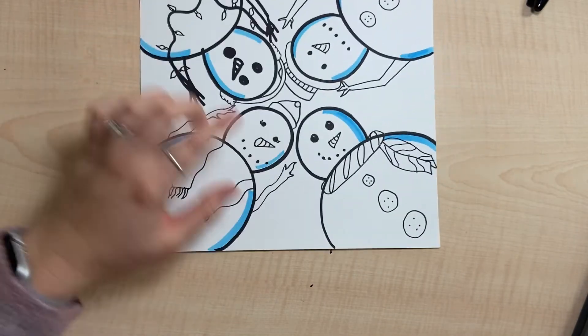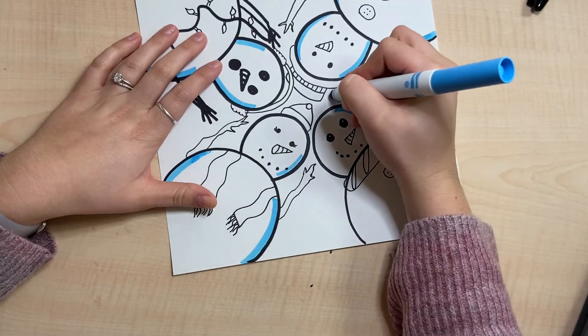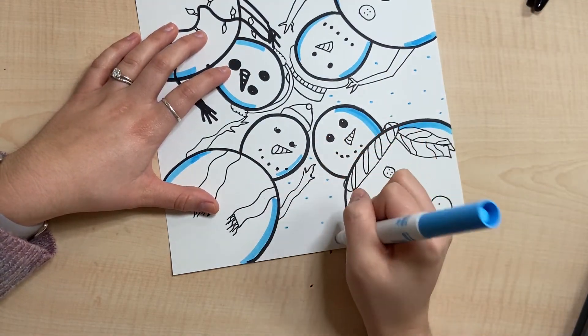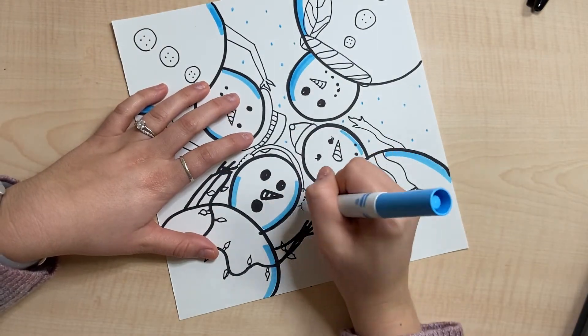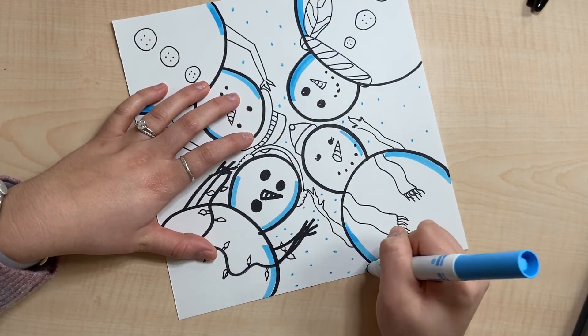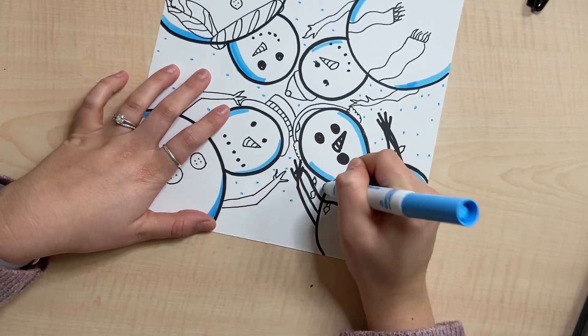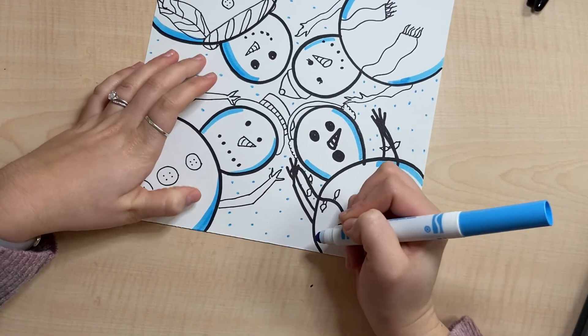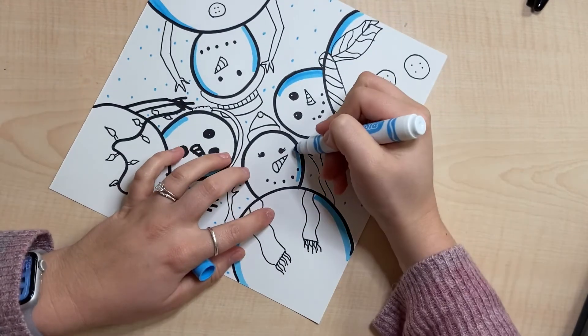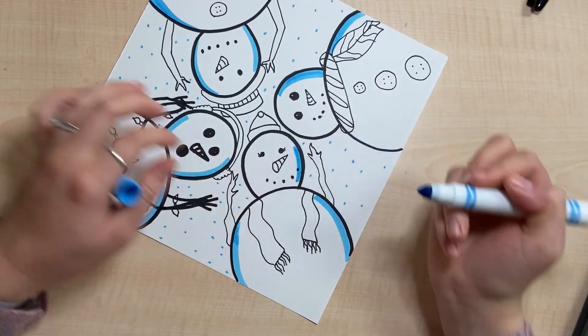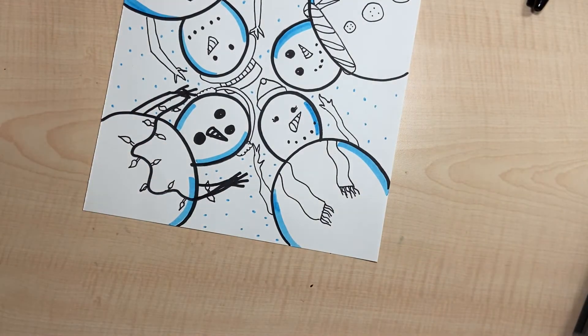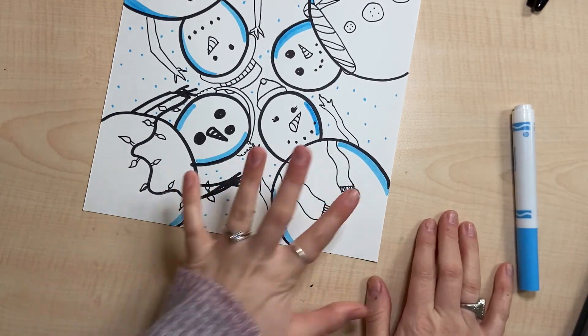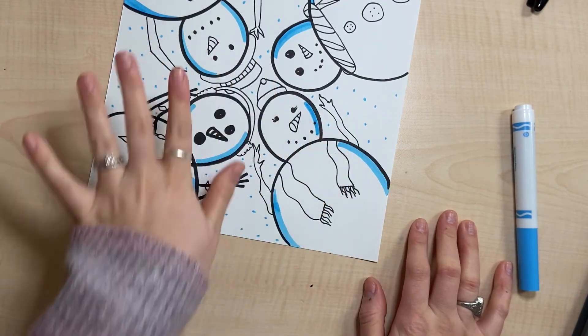That really gives that effect. We can also do snow falling, so we'll just do dots. Lastly, let's go ahead and color. I'm gonna put on a time lapse for that. You just want to color all your little details, and obviously you can leave the snow people bodies white.